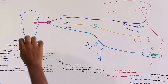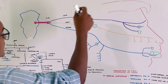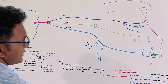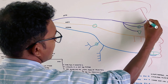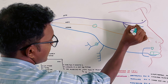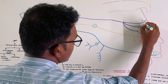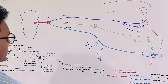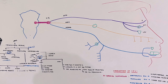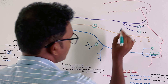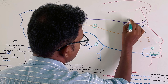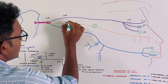The trigeminal nerve has sensory and motor properties. The ophthalmic nerve has three branches: the first is the frontal nerve, the second is the nasociliary nerve — which connects to the ciliary ganglion — and the third is the lacrimal gland branch. The ophthalmic division passes through the superior orbital fissure.